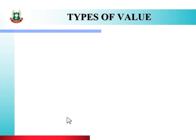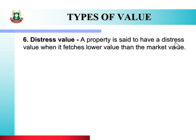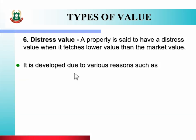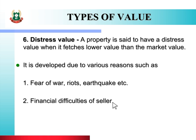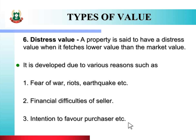Next type of value is distress value. A property is said to have a distress value when it fetches lower value than the market value. Distress means value में गिरावट आना — जब property की value market value से कम रहती है तब उसे distress value कहते हैं। यह distress value कम होने के कुछ कारण हैं: fear of war, riots, earthquake, etc.; financial difficulties of the seller; and intention to favor the purchaser.